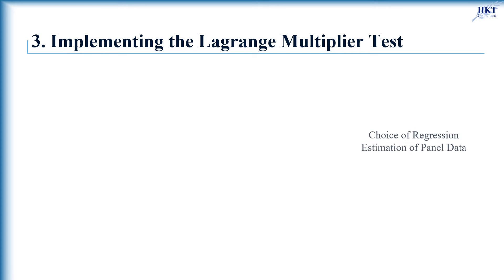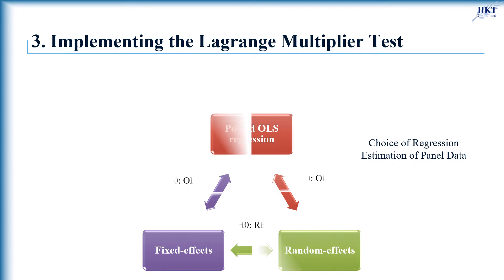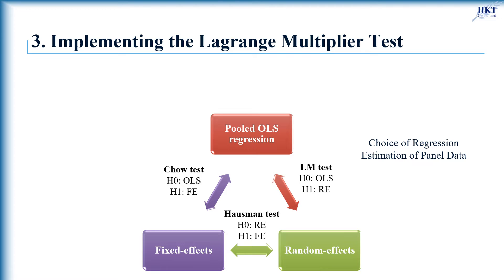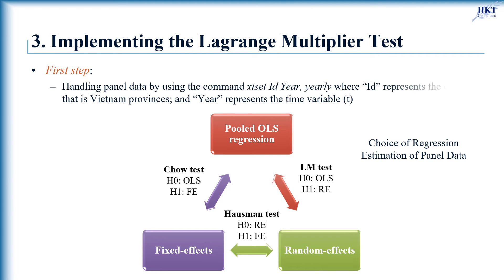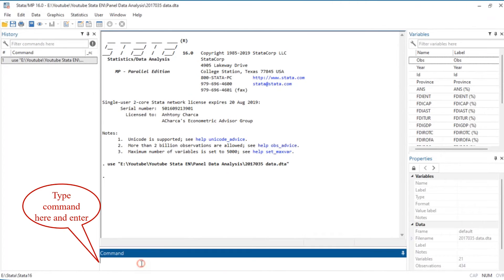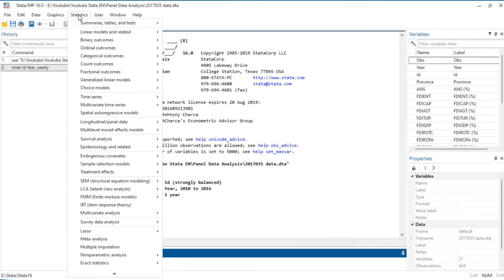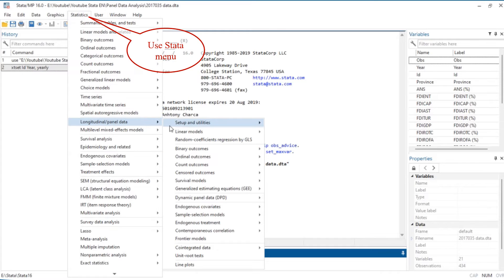Now, we perform the Lagrange multiplier test in STATA for choosing a regression model for our panel data of Vietnam provinces. The Lagrange multiplier test is applied after estimating the random effects model. Firstly, you need to set STATA to handle panel data by using the command xtset. Type the command here. Note that STATA distinguishes capital letters, so you must type exactly the variable name.